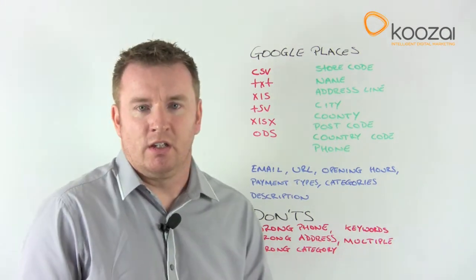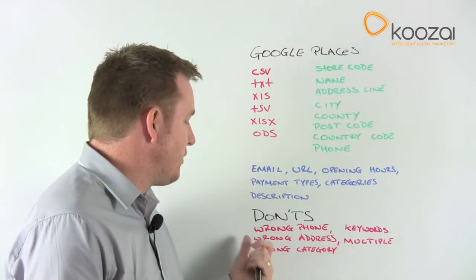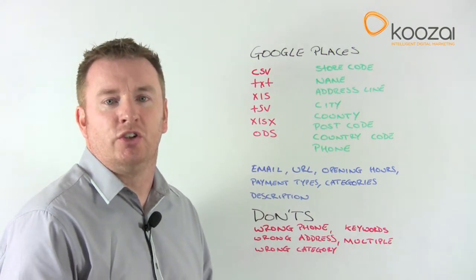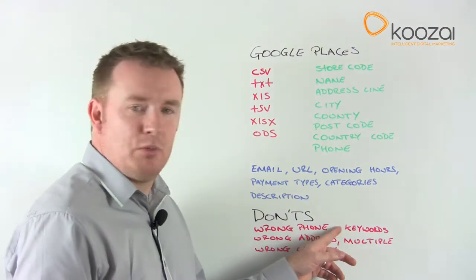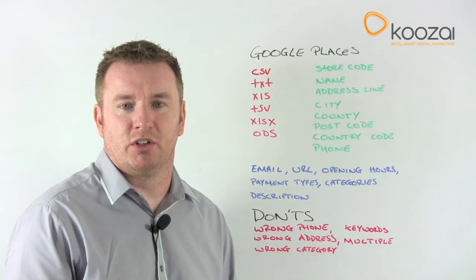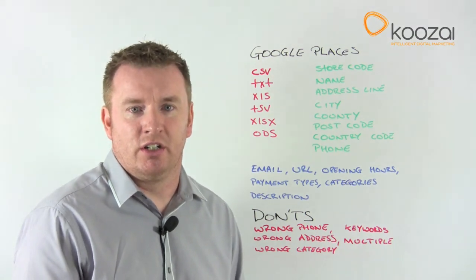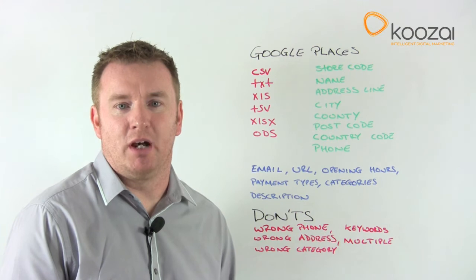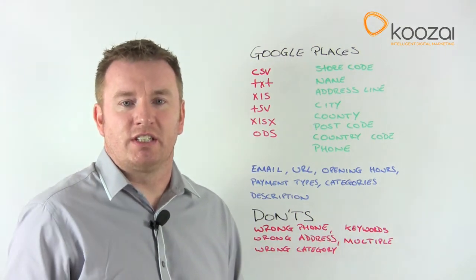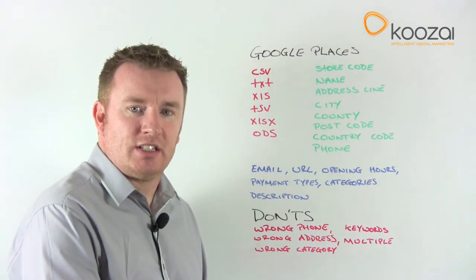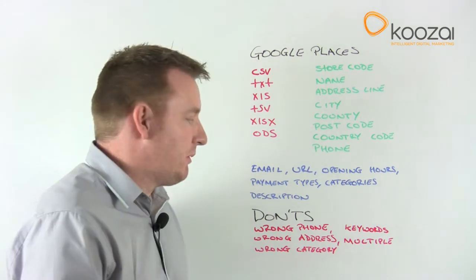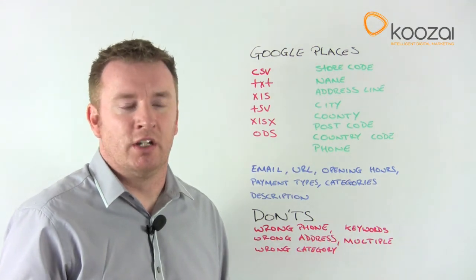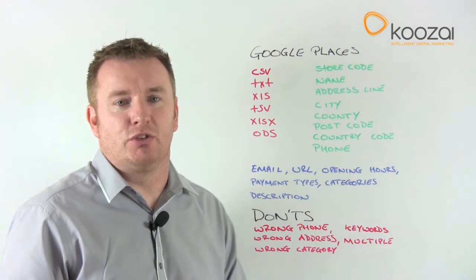There are some don'ts as well. Make sure you don't put in the wrong phone number — as mentioned, it should be the physical location phone number, not a generic number. Don't add keywords to the categories; Google has set out their categories, so make sure you use them correctly — you don't need to add extra information. Don't put in the wrong address; you'll be surprised how many people don't include the full address. If you have citations coming into this profile, make sure the address matches up. Don't set up multiple profiles — you only need one, and you won't gain any advantage from having more than one; if anything, it will cause confusion and you might end up with no listings at all.